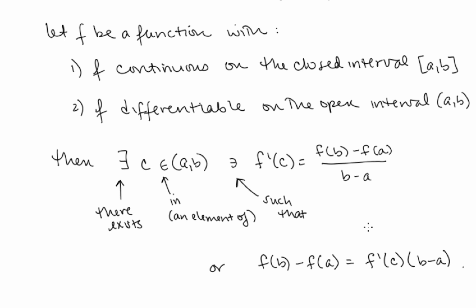Here we're just learning the very basics of the Mean Value Theorem, and we're going to show existence of these points c and sometimes find those c values. Notice that f(b) minus f(a) over b minus a is the slope between two points on the graph — this is a secant line slope. What we're saying is that there exists an x value, called c, in this interval, so that the derivative at c — the slope of the tangent line at c — is equal to that secant slope.